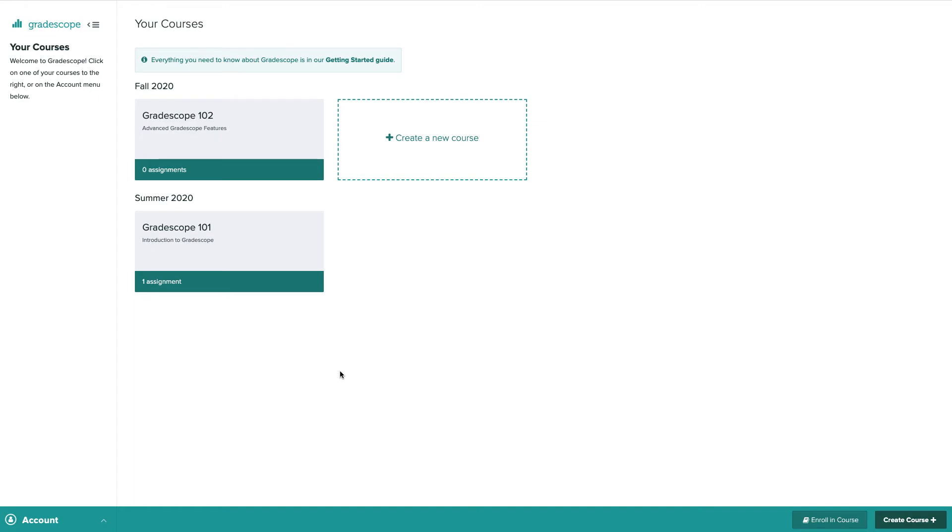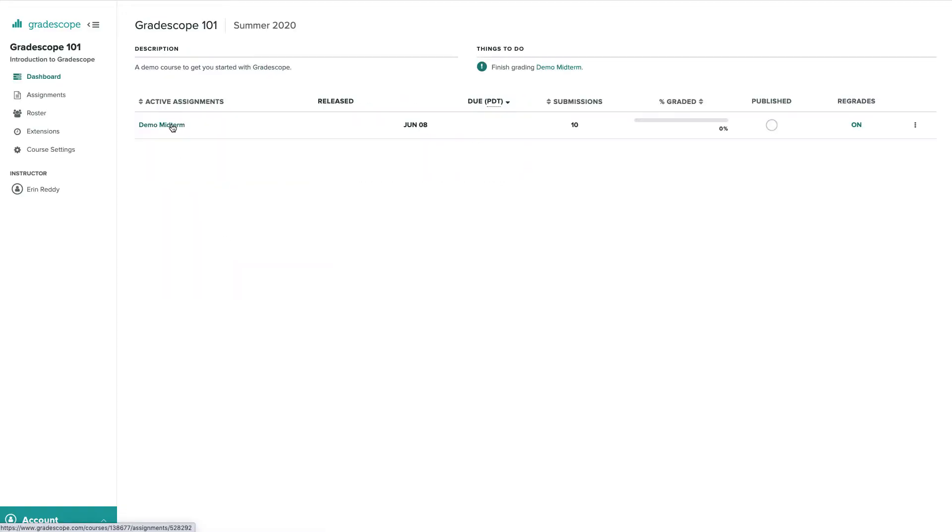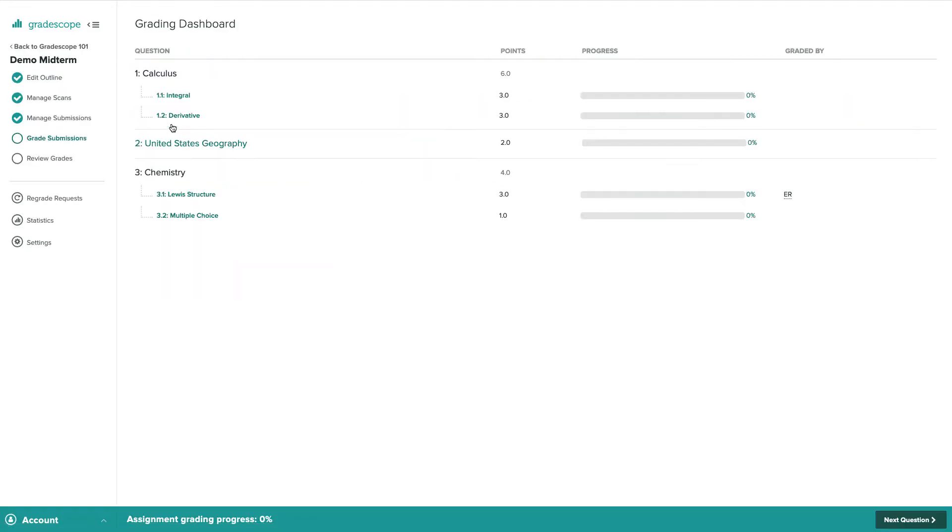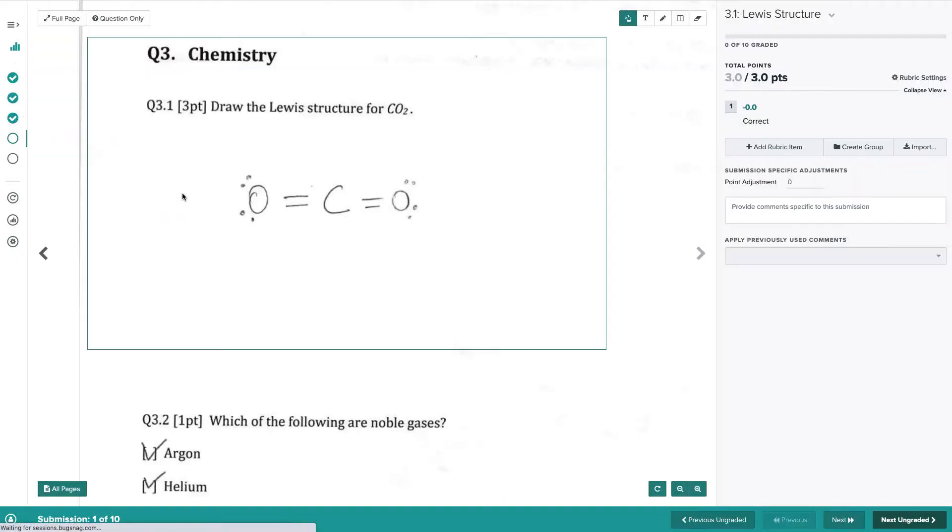From my home page, let's select the demo course Gradescope 101. Let's select the demo midterm. We are currently in the grade submissions tab. Let's select question 3.1 and let's start grading.